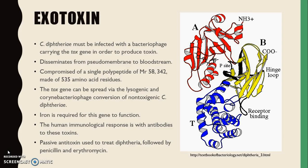The diphtheria toxin affects the human body by inhibiting protein synthesis within cells. Localized tissues at the site of infection are killed and a suede membrane forms. This membrane allows the toxin to enter the bloodstream and be disseminated from there. This toxin is comprised of a single polypeptide of MW 58,342 and made of 535 amino acid residues. The expression of this gene requires iron to function.